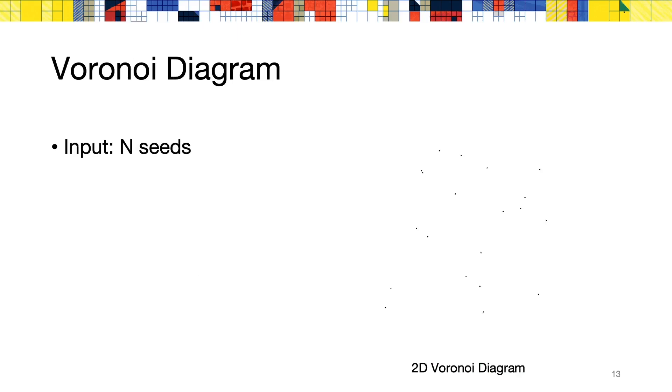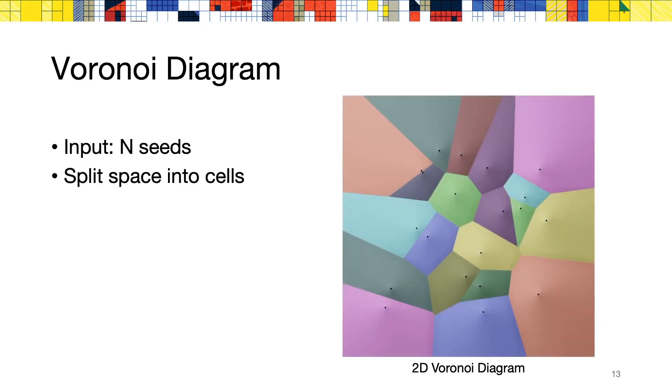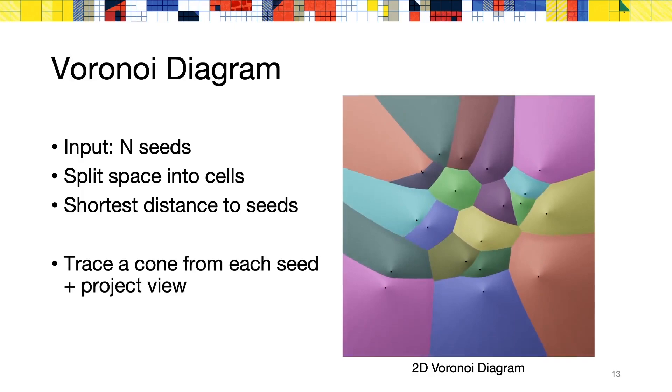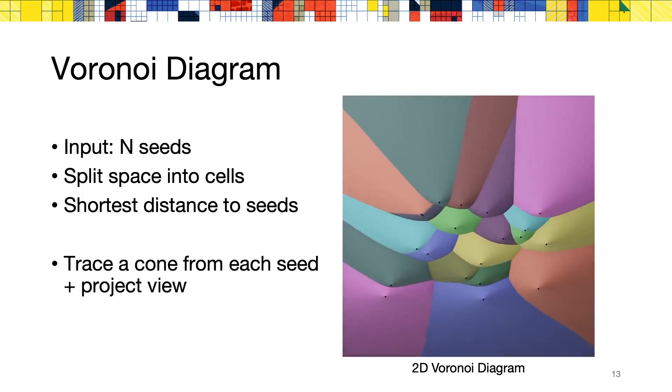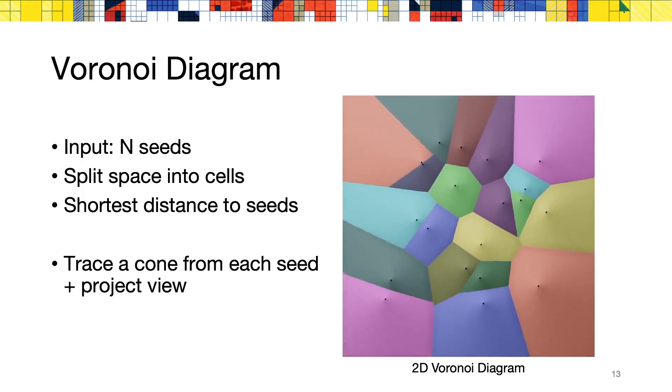Before we go any further, I would like to provide a short reminder on Voronoi diagrams. Given a set of N input seeds, a Voronoi diagram will partition the space into cells, based on which point in space is the closest to each seed. In 2D, this can be interpreted as the orthogonal projection of cones placed on each input seed, as illustrated in this video.